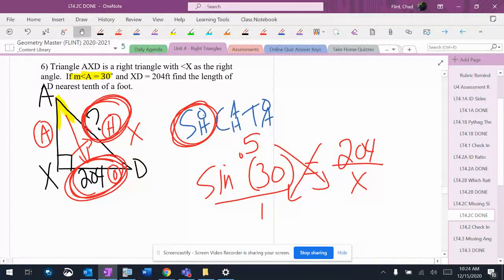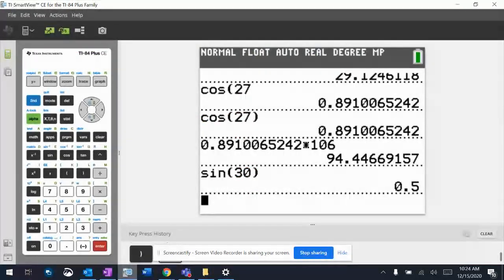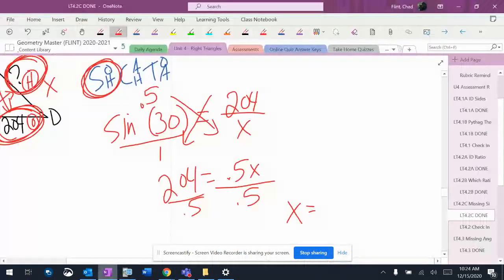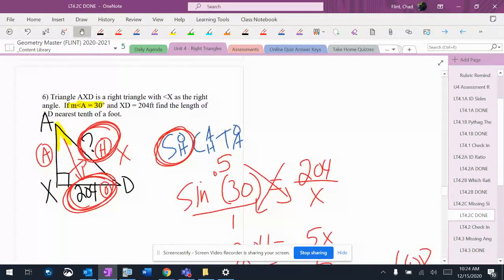So I cross multiply, and I'm going to get 204 equals 0.5X, and I divide by 0.5. And I get X equals 408. There's no decimal.